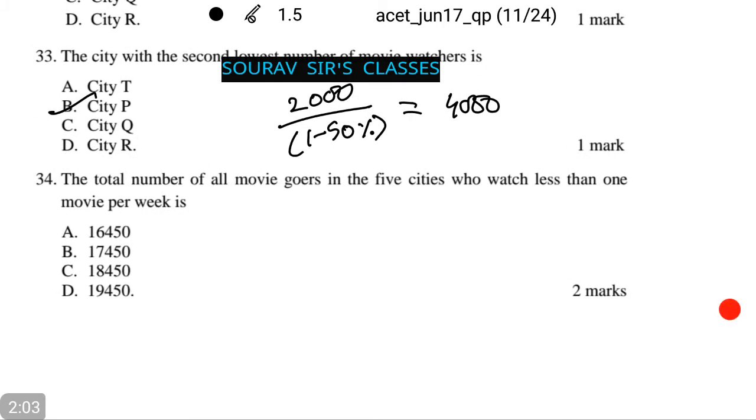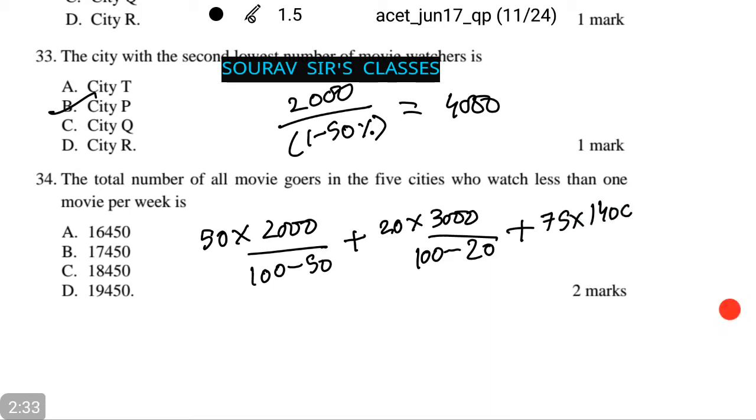Now we see number 34. The total number of all moviegoers in the 5 cities who watch less than one movie per week is amongst the following. Let us calculate: 50 into 2000 by 100 minus 50, plus 20 into 3000 by 100 minus 20, plus 75 into 1400 by 100 minus 75.